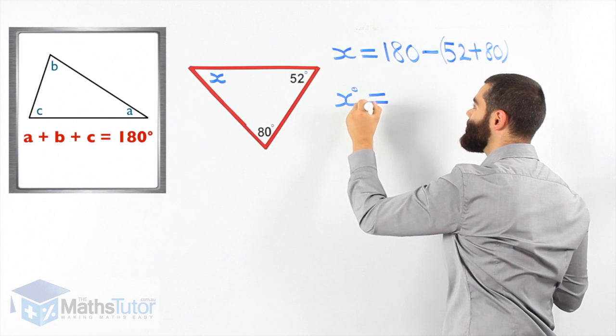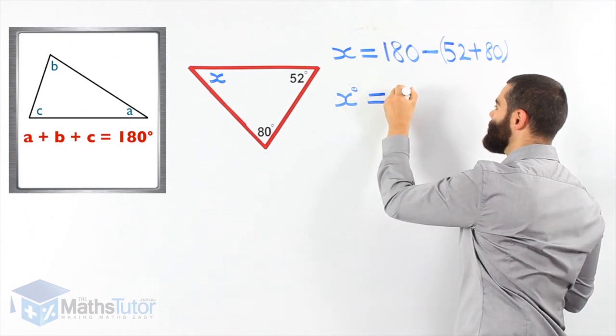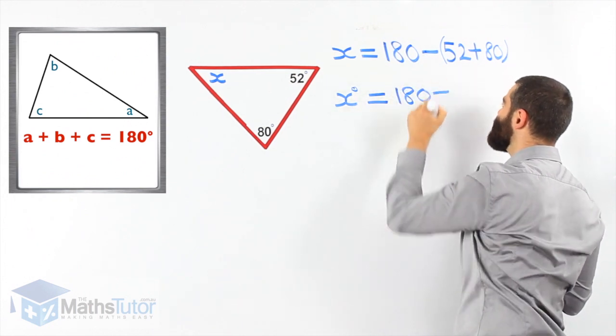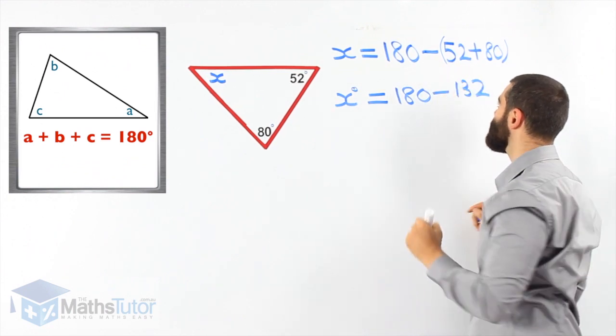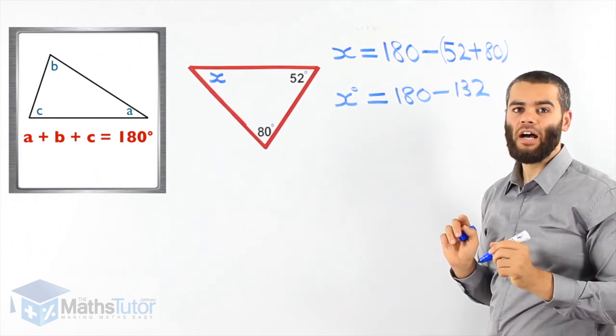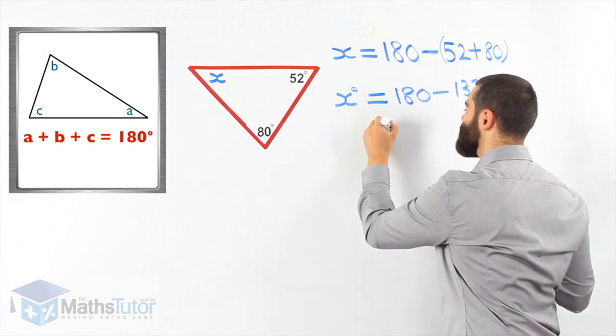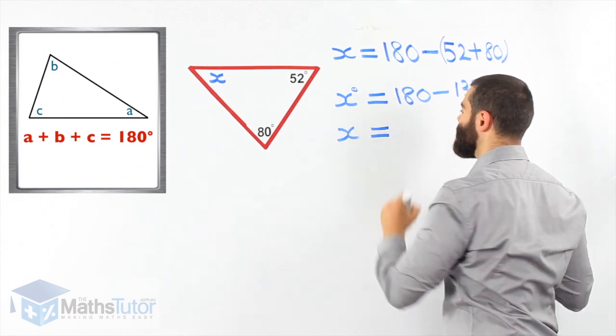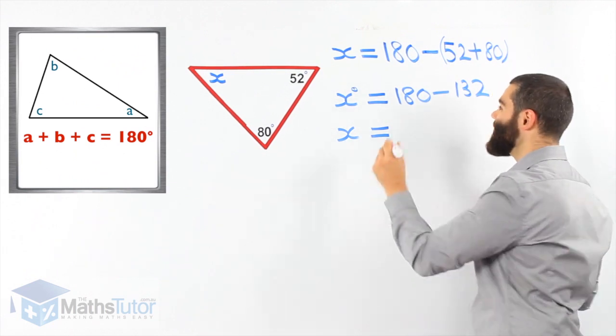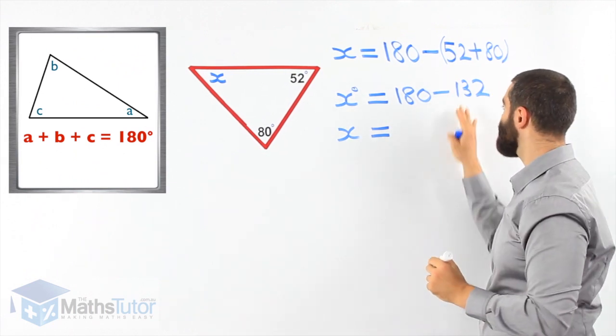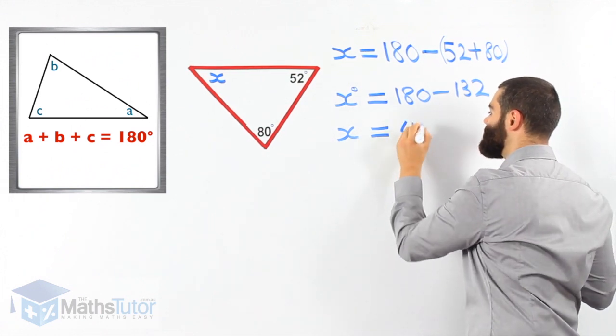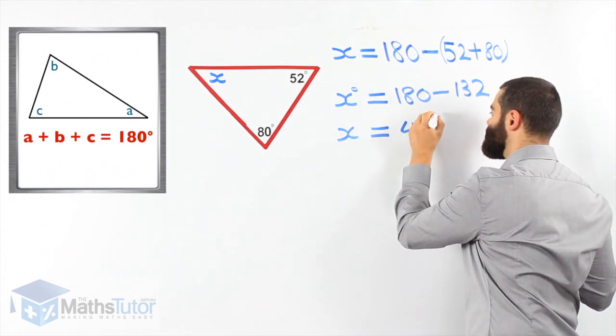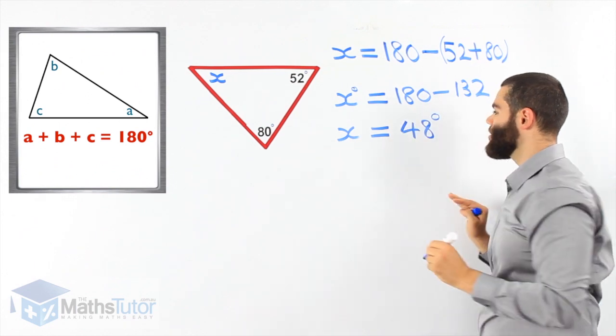X degrees is 180 minus 132. 52 plus 80, 132. Now we can work and find the missing angle X. X is 180 minus 132. X is going to be 48 degrees.